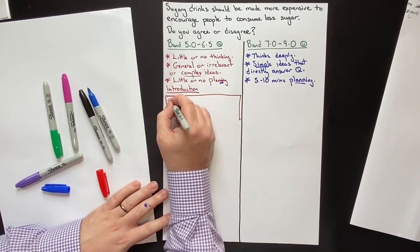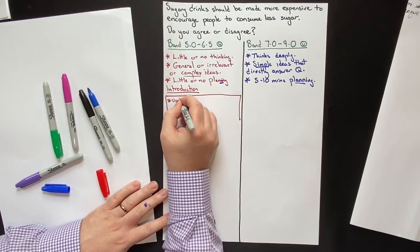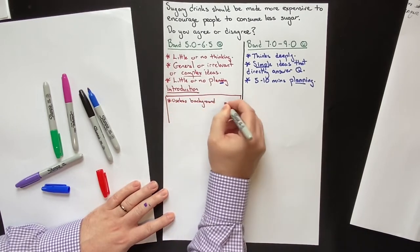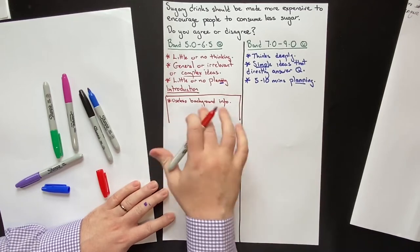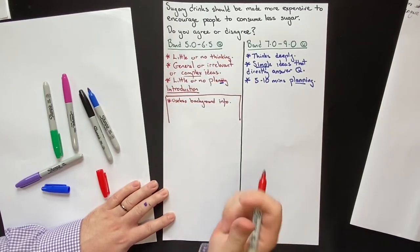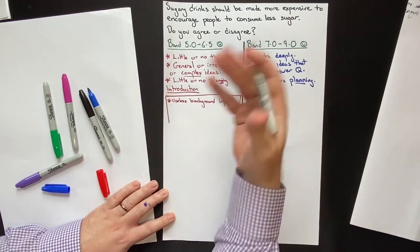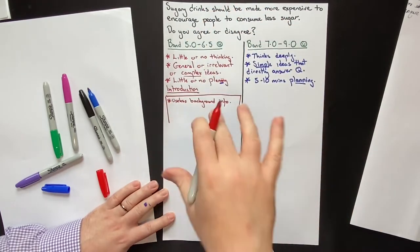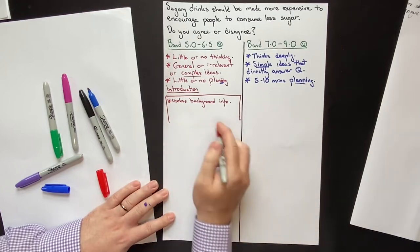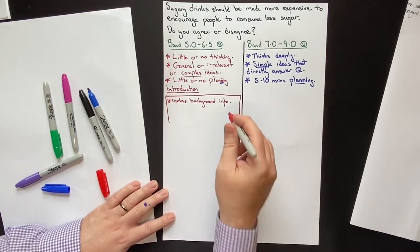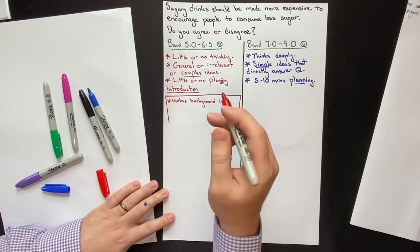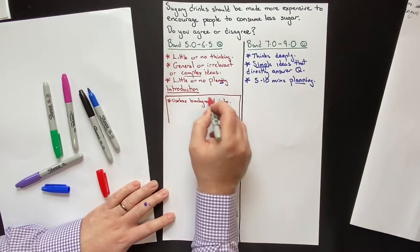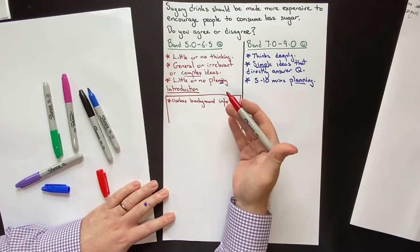Consistently what we see with low-scoring students is useless background information or background statements. They'll consistently say things like 'In the modern world' or 'Nowadays, sugary drinks are a very hot, controversial topic in the modern world' — nonsense like that. This isn't really going to lower your score, but it doesn't add anything either. You've wasted a huge amount of time doing basically nothing.